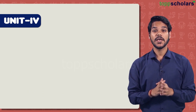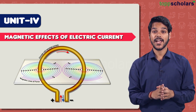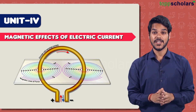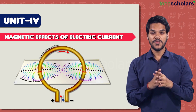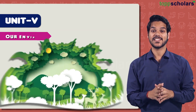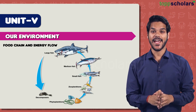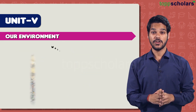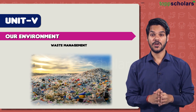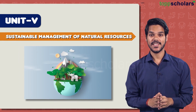The next chapter in Unit 4 is Magnetic Effects of Electric Current. From this chapter you can expect an experiment or activity-based question where an activity will be described and you'll be asked questions based on it. Moving on to Unit 5 — the first chapter is Our Environment. The most important concepts here are food chains and energy flow, and questions based on waste management are also very important.